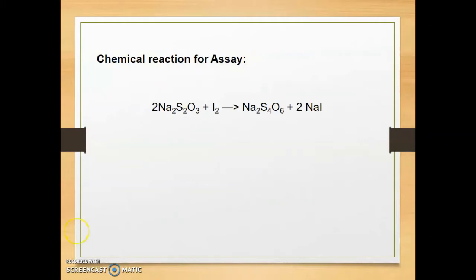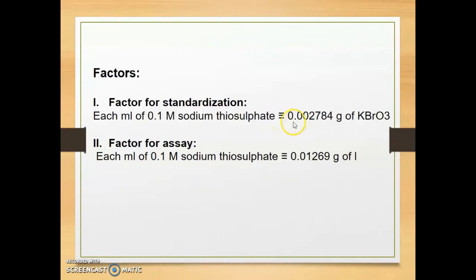Chemical reaction: two molecules of sodium thiosulfate (Na2S2O3) plus iodine gives Na2S4O6 plus two molecules of sodium iodide. Factor for standardization: each ml of 0.1 molar sodium thiosulfate is equivalent to 0.002784 grams of potassium bromide. Factor for assay: each ml of 0.1 molar sodium thiosulfate is equivalent to 0.01269 grams of iodine.